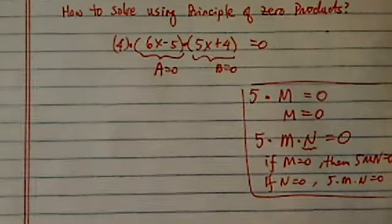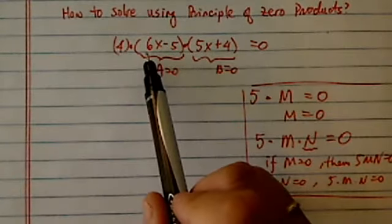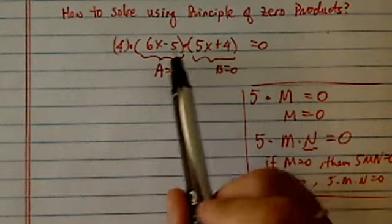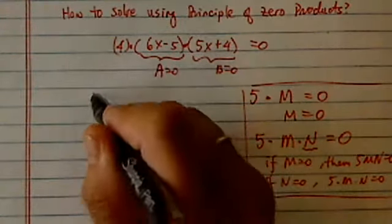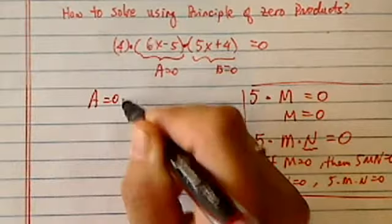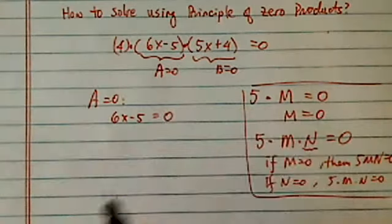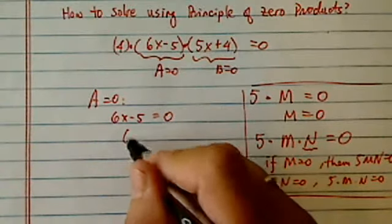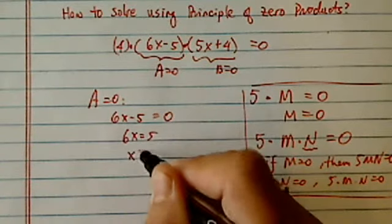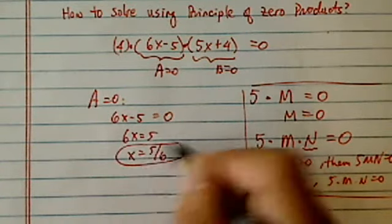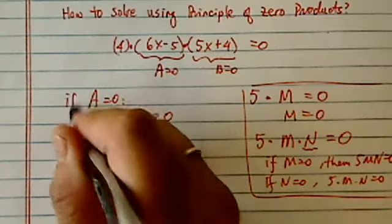So in order for us to figure what a special X is to make the whole thing equal to zero, we'll let A equal to zero. From there, then we have six X minus five equals zero. It's pretty easy to solve. Six X equals five and X equals five over six. That's the first one.